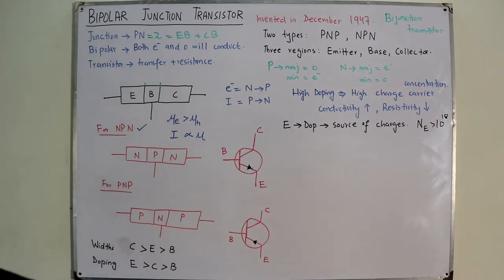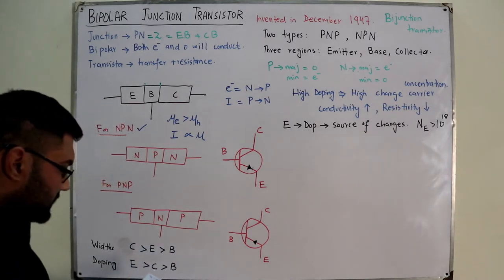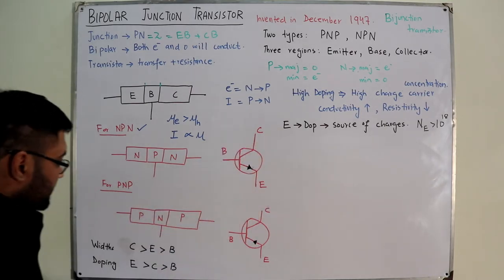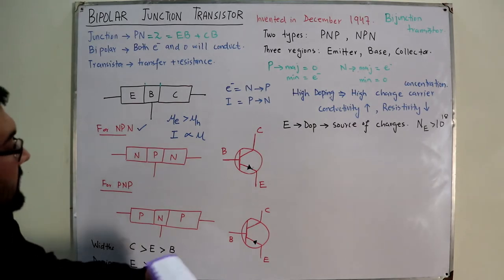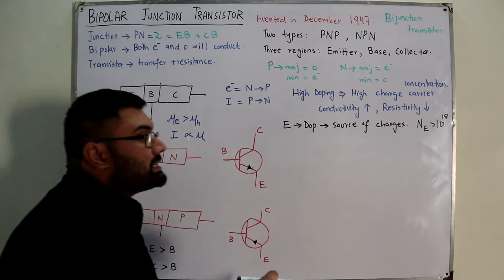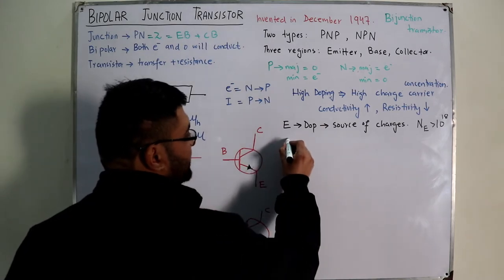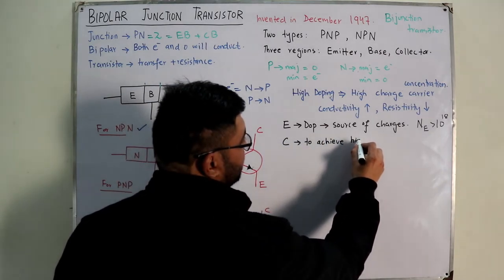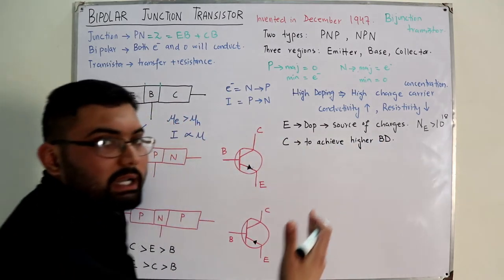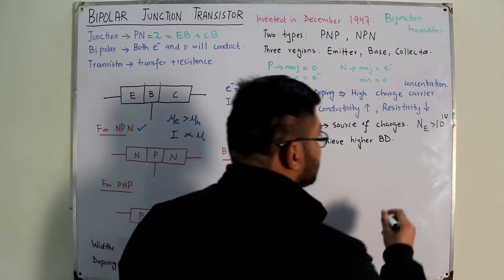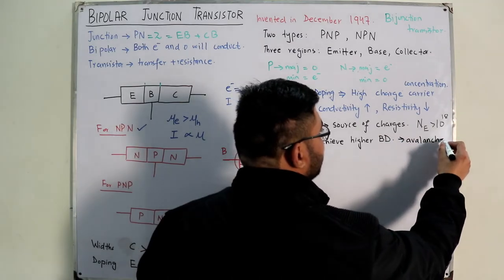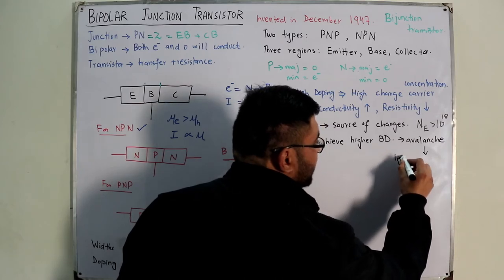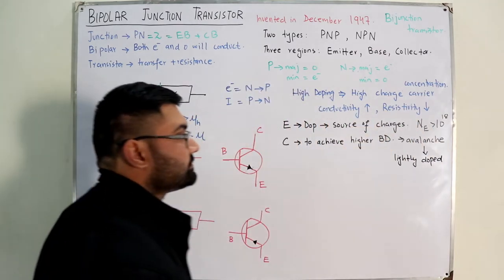The base is moderately doped, and the collector is also relatively lightly doped compared to the emitter. The collector is lightly doped to achieve a higher breakdown voltage. Avalanche breakdown occurs at higher values of reverse bias potential and in lightly doped materials - so lighter doping of the collector helps achieve a higher breakdown voltage.